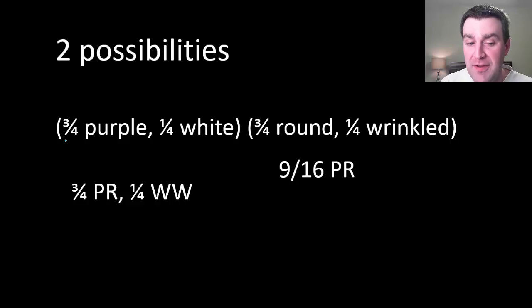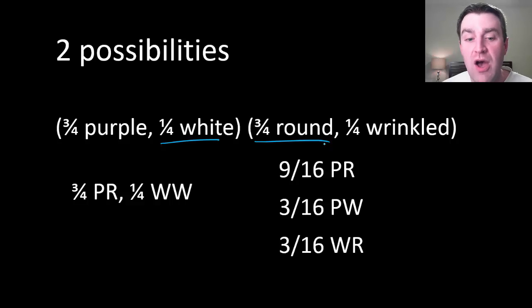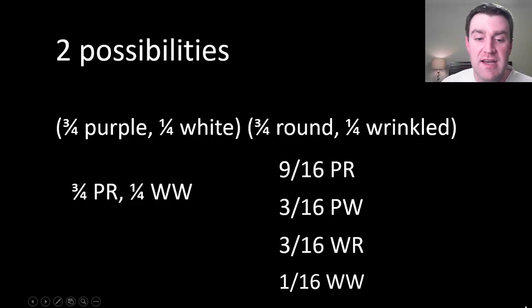In the FOIL method, you multiply the outside next. So if you multiply these two, you'd expect three-sixteenths of the offspring to be purple and wrinkled. I means inside, right? So if you multiply these two, three-sixteenths of the offspring would be white in flower color and round in seed shape. And if you multiply the last for FOIL, maybe one-sixteenth of the offspring would be white and wrinkled.